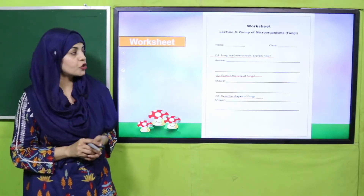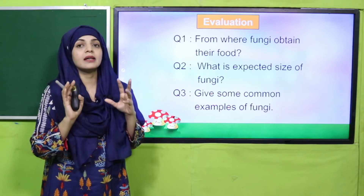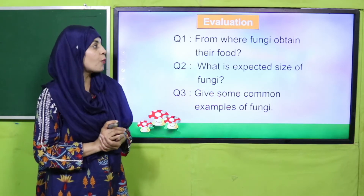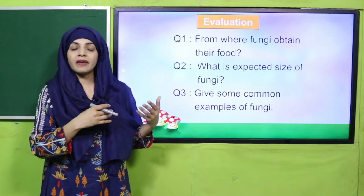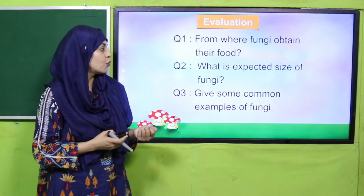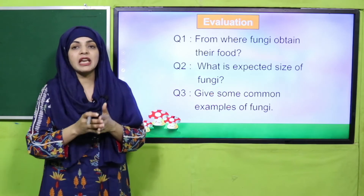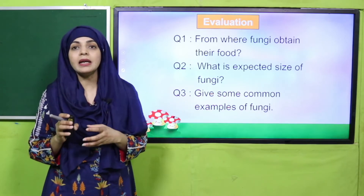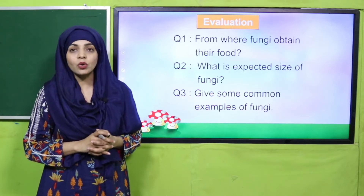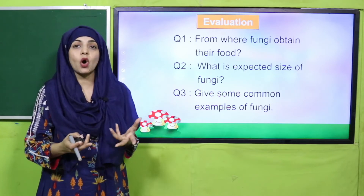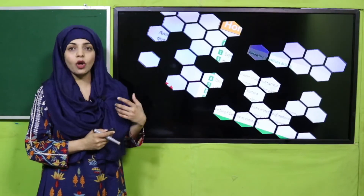I hope all of you have finished. Now we will move forward to the evaluation. Focus and listen to the questions carefully. From where do fungi obtain their food? Either by living as a parasite or by decomposing matter. What is the expected size of fungi? It is between 5 to 50 mm in length and 2 to 10 mm in diameter. Give some common examples of fungi: Ascomycota, Basidiomycota, mushrooms, and Penicillium, which are called bread molds.